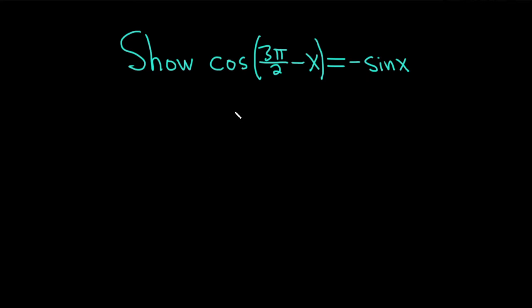Hello, in this video we're going to show that the cosine of 3π/2 minus x is equal to minus sine x. Let's go ahead and carefully work through it.